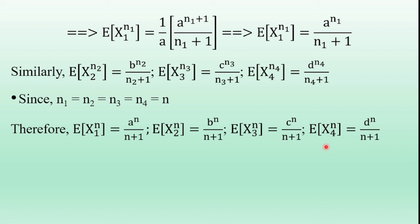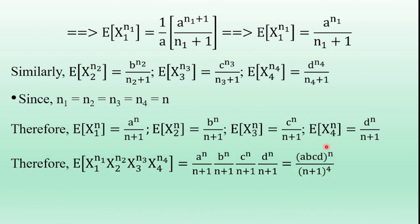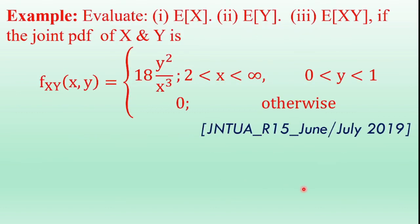Substituting all these expected values into the product expression, E[x1^n * x2^n * x3^n * x4^n] = (a^n / (n+1)) * (b^n / (n+1)) * (c^n / (n+1)) * (d^n / (n+1)) = (abcd)^n / (n+1)^4.